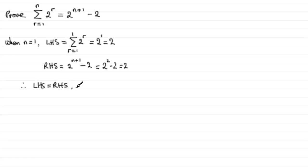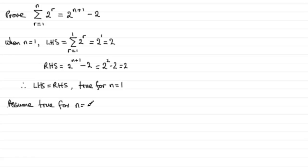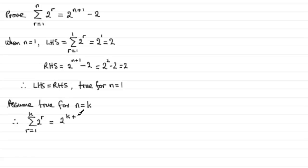So it's true for n equals 1, because the left hand side equals the right hand side. Now we assume that it's true for some particular value of n — assume true for n equals k, where k is a positive integer. This means the summation of 2 to the power r, r going from 1 to k, equals 2 to the power k plus 1 minus 2, wherever n is replaced with k.